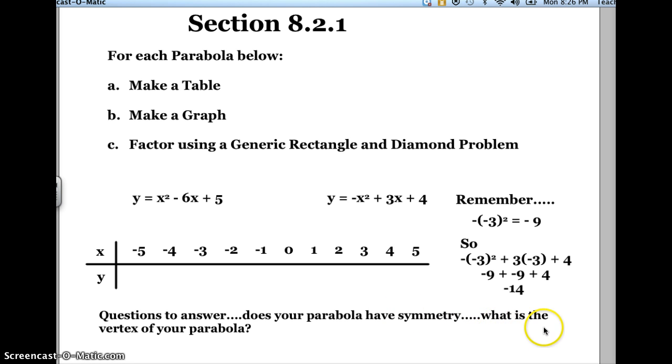And then also, what is the vertex of your parabola? Well, it kind of should make a U or a V, an upside down U or not upside down U or V. And the vertex is the lowest point, or if it opens downward, it's going to be the highest point. So I want you to kind of answer those questions.